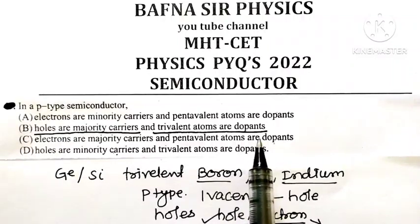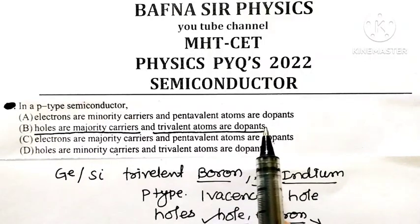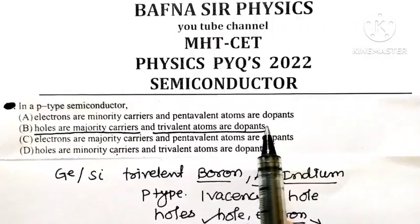That impurity atom is called what? Dopant. Actually, they are also known as acceptor impurity because they will accept the electron.